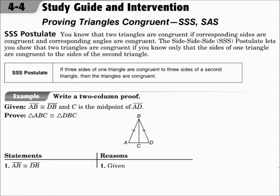This is Lesson 4.4, Proving Triangles Congruent, Side-Side-Side and Side-Angle-Side. In addition to being able to show triangles are congruent with all three pairs of sides and all three pairs of angles, you can take some shortcuts. If you know the three pairs of sides are congruent, that's enough to say that the triangles are congruent, and that rule is called the SSS Postulate.